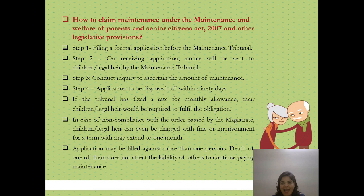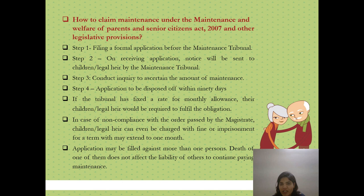Maximum within 120 days, the application should be disposed of and the Maintenance Tribunal should be ready with the order. If the Tribunal has fixed the order for monthly allowances, the child or legal heir would be required to fulfill that obligation. In case of non-compliance with the order passed by the Magistrate, the child or legal heir can be charged with fine or imprisonment for a term which may extend to one month. It is also important to note that if an application is filed against more than one person, the death of one of them does not affect the liability of others to continue paying maintenance.